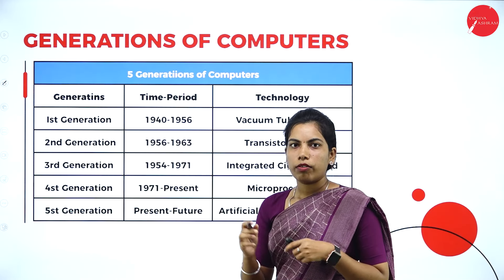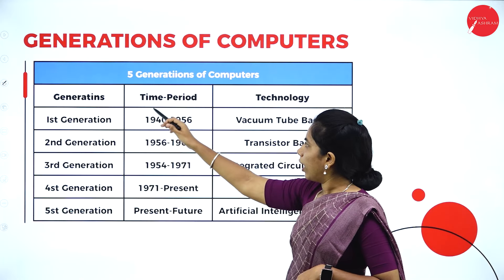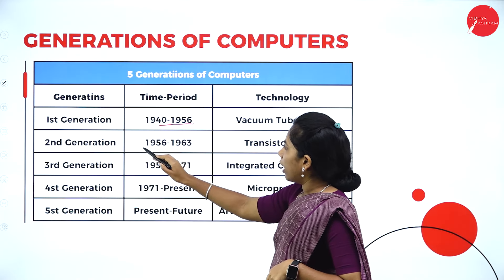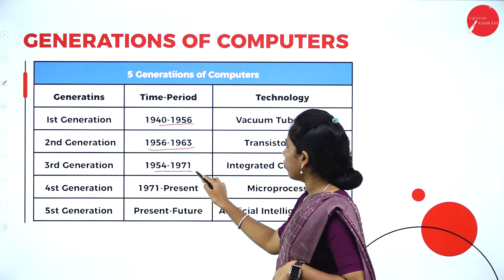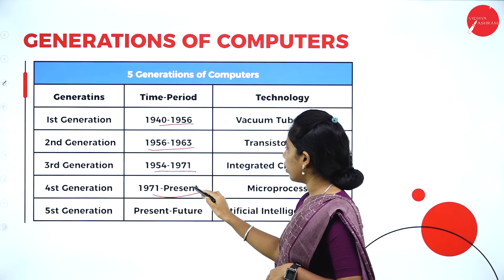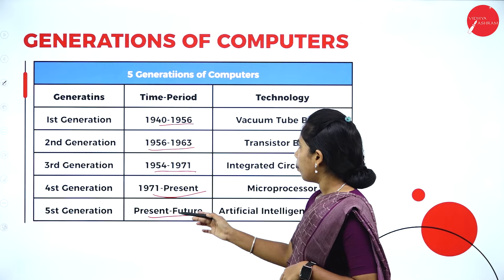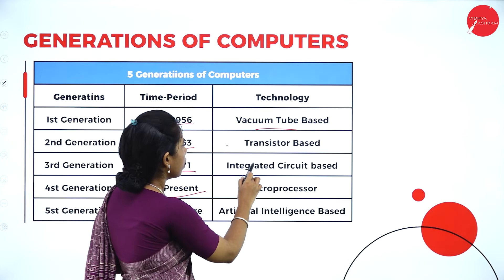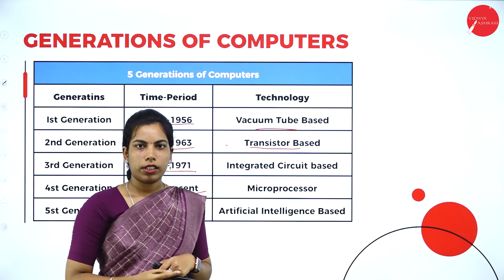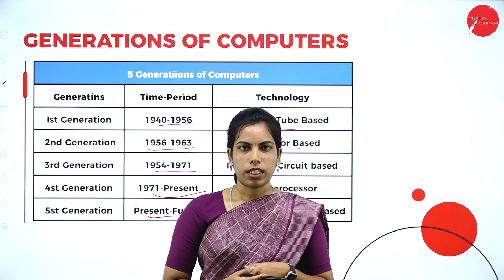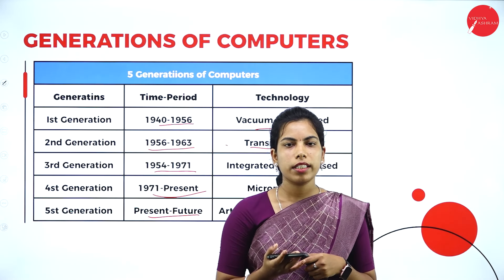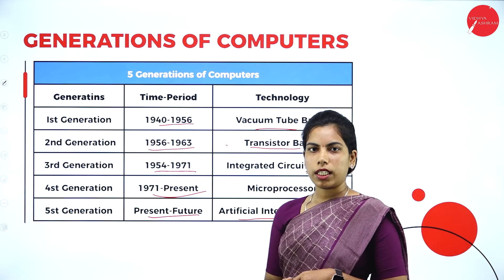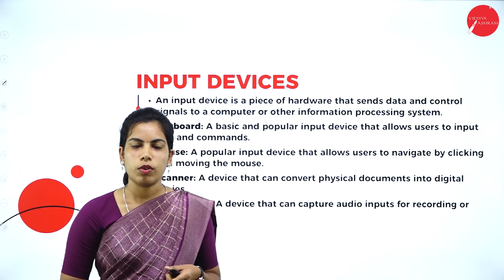Let's have a quick revision. Here you can see the five generations and their time periods: first generation 1942/1945 to 1955, second generation 1956 to 1963, third generation 1964 to 1971, fourth generation 1971 to present, and fifth generation present to future. The technologies introduced: first generation - vacuum tubes, second - transistors, third - integrated circuits, fourth - microprocessor, fifth - artificial intelligence. Artificial intelligence means the computer doesn't have its own capability of thinking - as humans, we provide the intelligence to the computer.